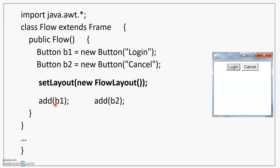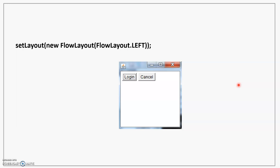This would result in the buttons placed like this. By default, the alignment of FlowLayout is center, so it will try to place components in the center. The first button added is 'login', and the second button added is 'cancel'. If you are adding more components, they will be placed left to right. After cancel, there will be a third component, and so on. When the space is exhausted, it will go to the next row and start placing the components there. Thus, in FlowLayout, components are placed left to right and then top to bottom.